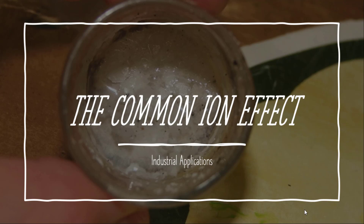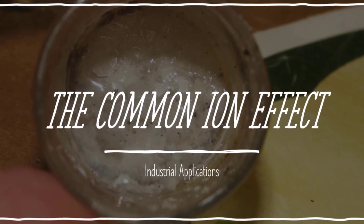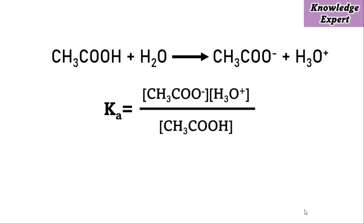Hello everyone, I am Omer and in this video we will discuss the common ion effect as well as its industrial applications. The dissociation of an acid or base is much affected if one of the dissociated ions is added from an external source. For example, in the dissociation of a weak acid such as CH₃COOH, this acid when dissociated gives CH₃COO⁻ and H₃O⁺, and the dissociation constant Ka for this reaction is shown here.